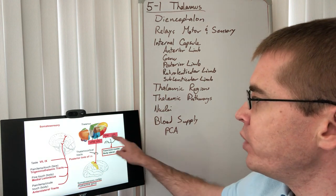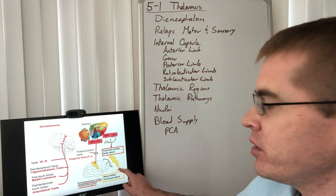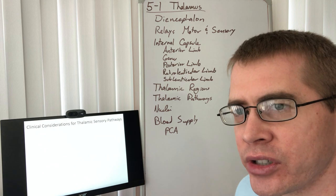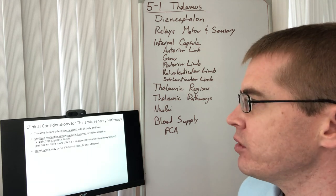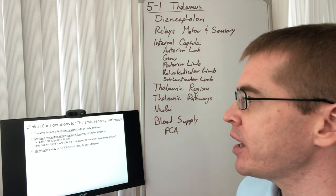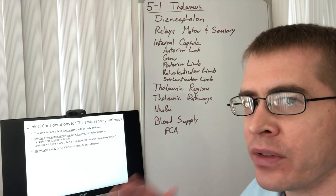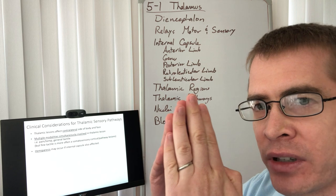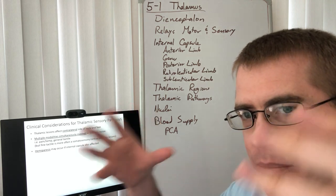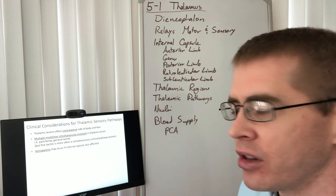As for clinical considerations: a thalamic lesion is going to affect the contralateral side of the body and will likely involve multiple modalities simultaneously, because all these tracks are converging into a fairly tight nucleus. They are not separate tracks with separate blood supply — it's one relay station with closely associated nuclei.